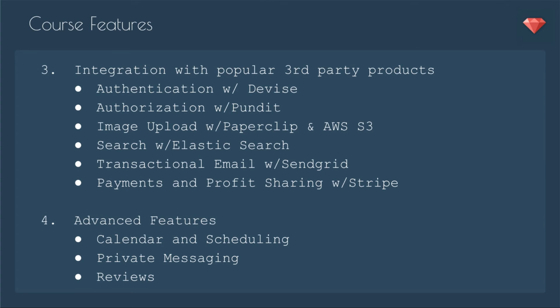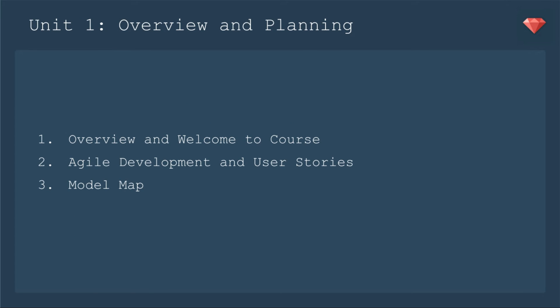Other advanced features include calendar and scheduling, private messaging, and reviews. When you're going to build any kind of project, you need to plan the project. So in unit one, we're going to be going over an overview and planning. Here we are in lesson one, the overview and welcome to the course. In the next lesson, we'll be going over agile development and user stories. And in lesson three, we will be creating a model map — it's like a blueprint for your whole app. It keeps you on course.